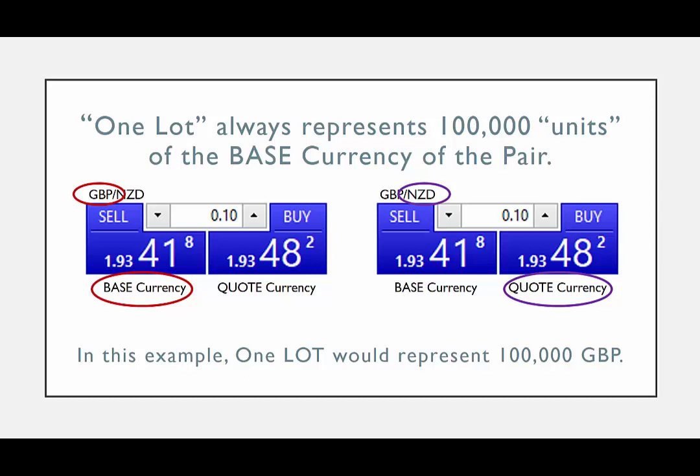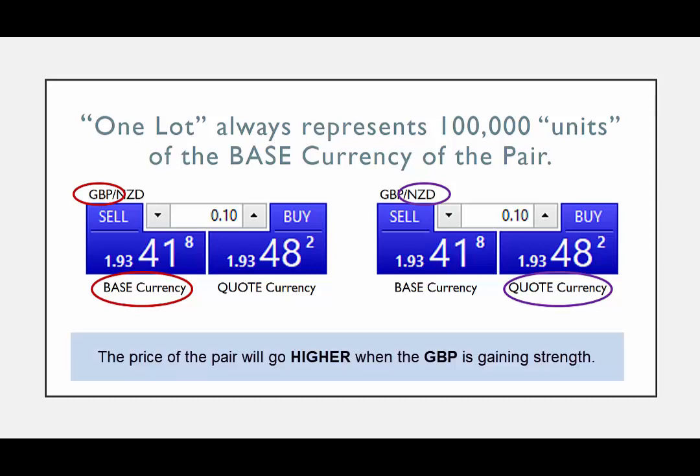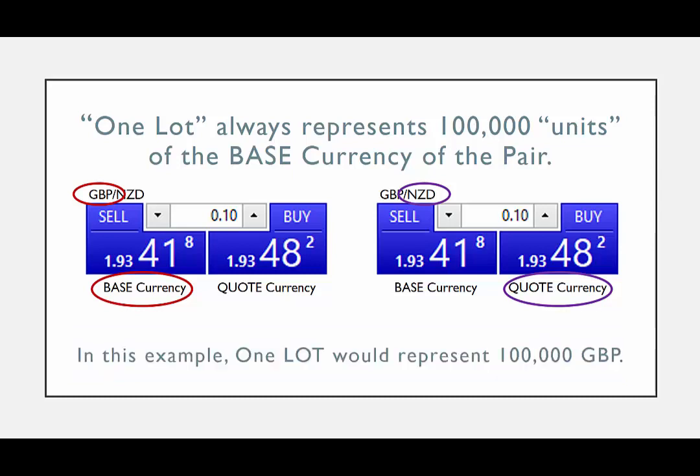The numbers are the current exchange rate to either sell the pair or buy the pair. If you think that the GBP is going to gain strength compared to the New Zealand Dollar, then you would buy the pair. If you think that the NZD is going to gain strength compared to the GBP, then you would sell the pair.